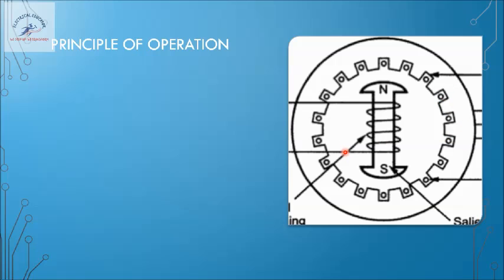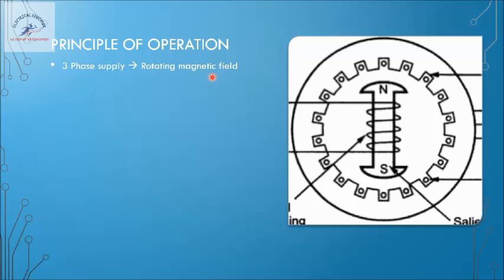Three-phase AC supply given to the stator will induce a rotating magnetic field. There will be particular sets of windings carrying the red, yellow, and blue phases (R, Y, B). Depending on the direction of winding, the magnetic field will be strong at one point and weaker at others. As the sinusoidal three-phase wave moves, the strength of the magnetic field varies at different points and the strongest point keeps on moving, giving us the effect called the rotating magnetic field.